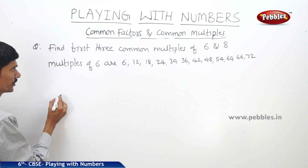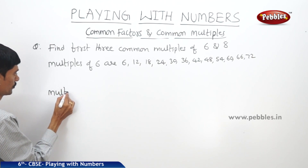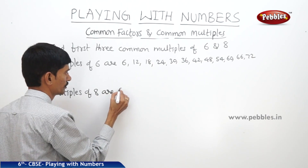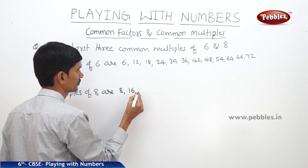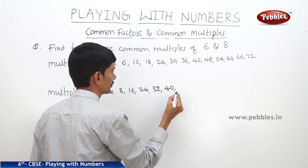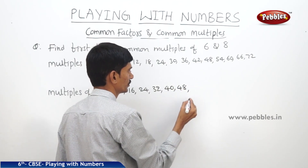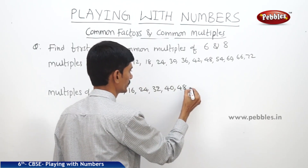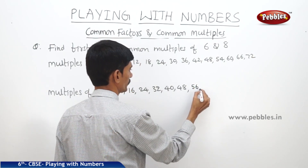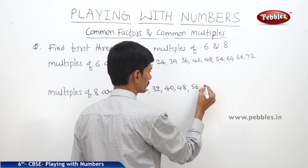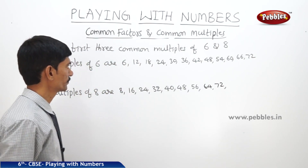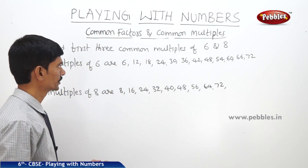Now the multiples of 8 are: 8, 16, 24, 32, 40, 48, 56, 64, 72 and so on. Now let us find the common multiples of 6 and 8.